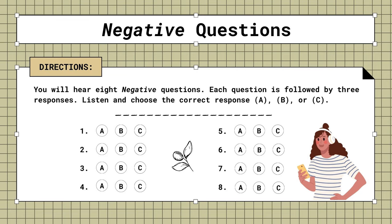1. Aren't you looking forward to the conference? A. Yes, we need to go forward. B. It's always the same every year. C. Sorry, I didn't see you there.